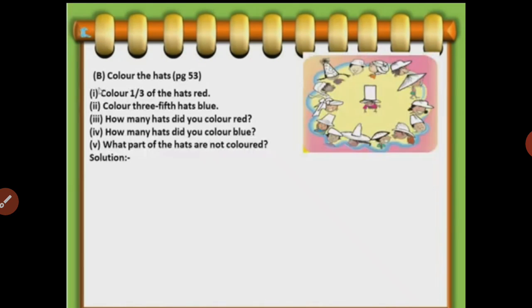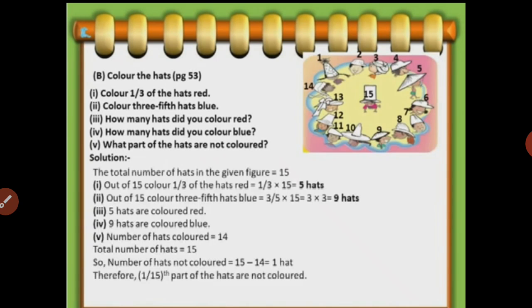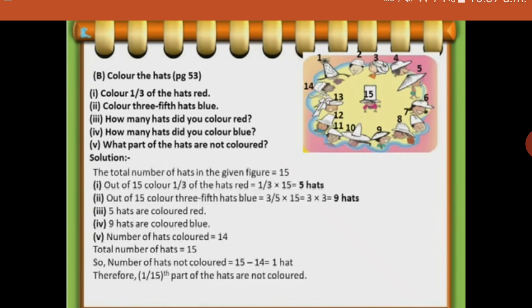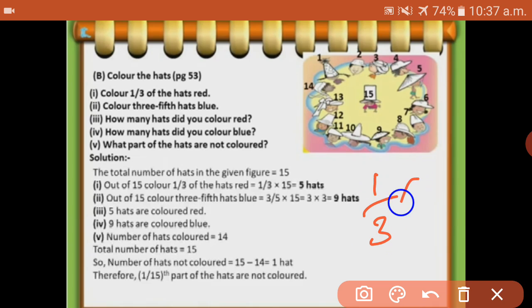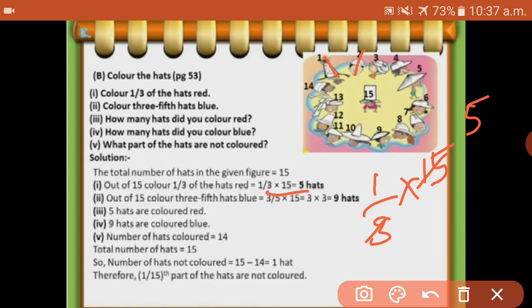Next, colour the hats, page number thirty-three. Colour one-third of the hats red. First count: there are fifteen hats. One-third means one by three into fifteen. One-three is three, five-threes are fifteen. So first five hats - one, two, three, four, five - are colored red.